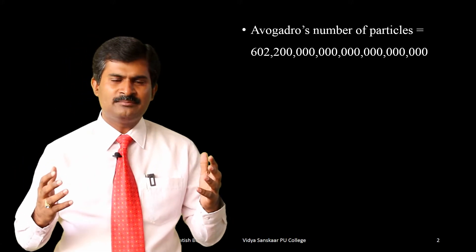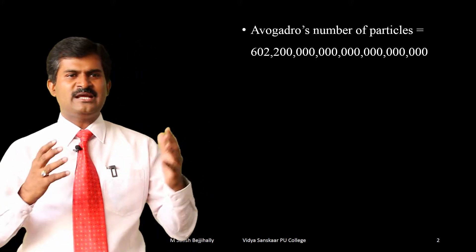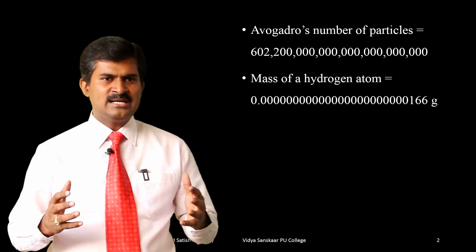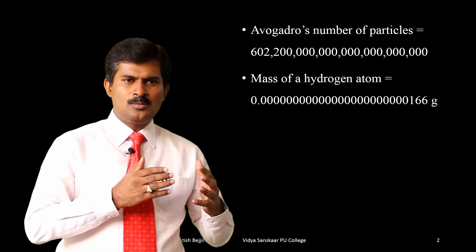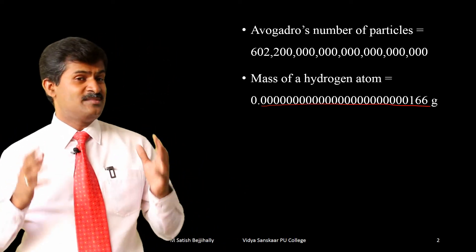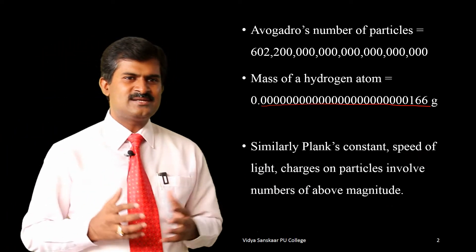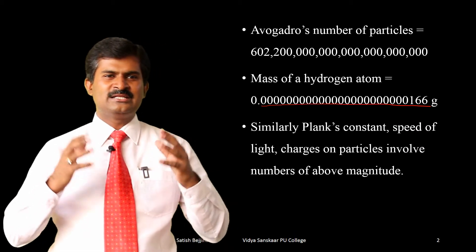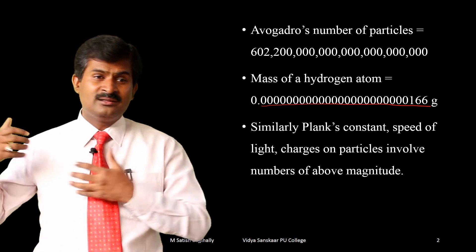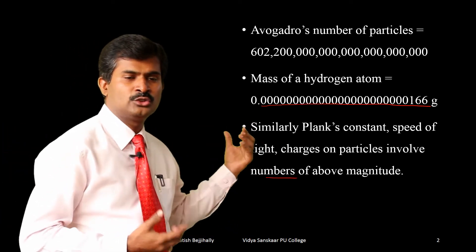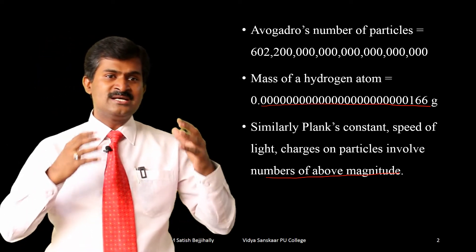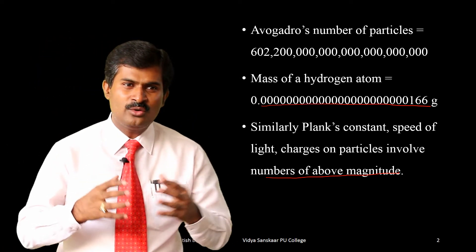It is very cumbersome to remember. If you take the mass of a hydrogen atom, we write 0 point followed by almost 23 zeros then 166 grams. Similarly, Planck's constant, the speed of light, and charges on particles involve numbers of these magnitudes. It is very tedious to write down such numbers in an ordinary way.